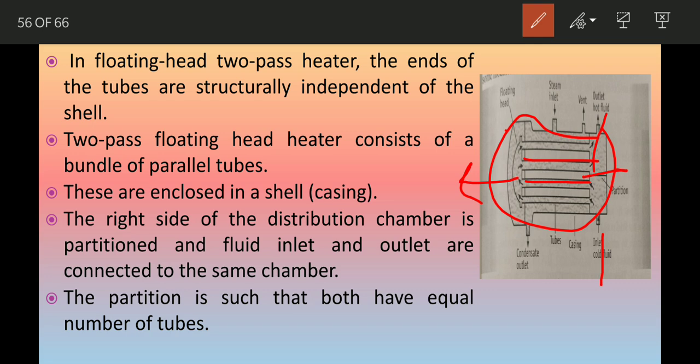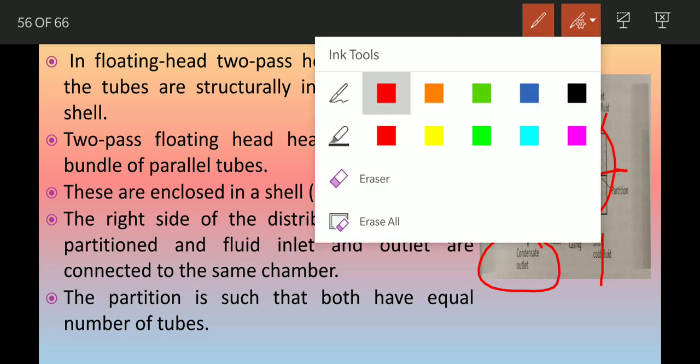The other end of the tube is embedded into the floating head. Steam or vapor is introduced through the inlet provided to the shell. Provisions are made for the escape of non-condensable vapor and exit of the condensate vapor. Here is the steam inlet; here you can collect the condensate vapor, and if there is gas, that will be passed from here. This is the construction.